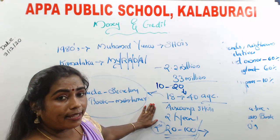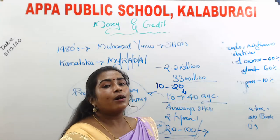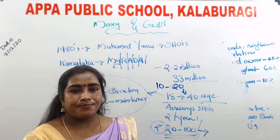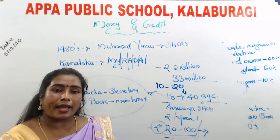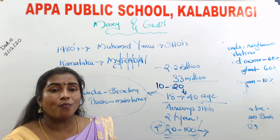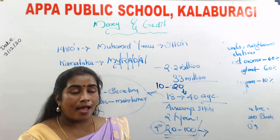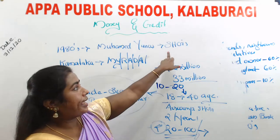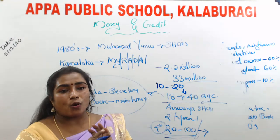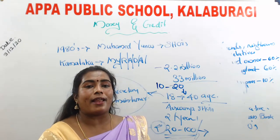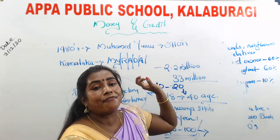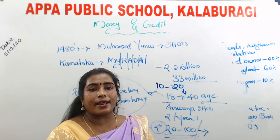SHGs are the building blocks of rural India. They help women to become empowered. When members sit together, they discuss problems related to health, nutrition, harassment, and domestic violence — and take solutions. The creation of SHGs helps banks to lend loans without collateral, overcoming the problem of lack of collateral. With the help of SHGs, women can become self-reliant. These are the main advantages of SHGs.